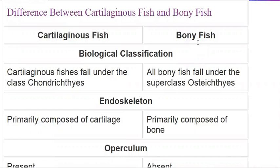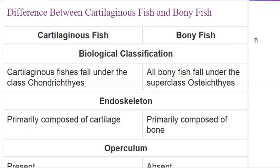Coming to cartilaginous fish and bony fish — cartilaginous fish is commonly called a shark, while bony fish includes rohu, catla, and goldfish. If the entire endoskeleton is made of cartilage, that is a cartilaginous fish. If the entire endoskeleton is made of bone, that is a bony fish.